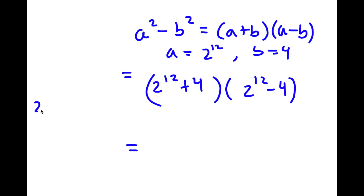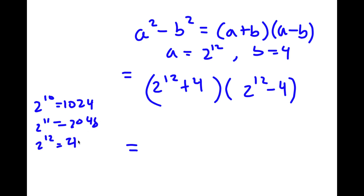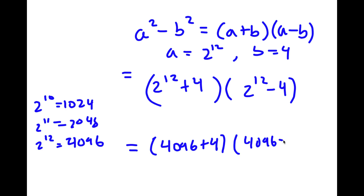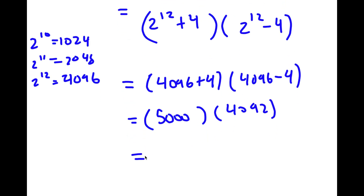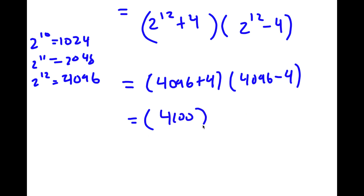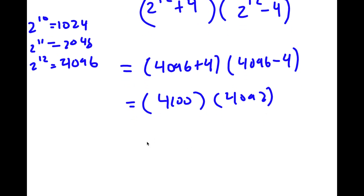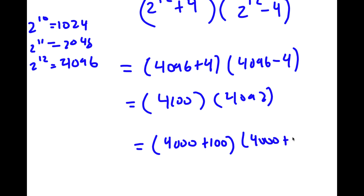Now, 2 to the power of 10 is 1,024. So 2 to the power of 11 is double that, which is 2,048. Meaning 2 to the power of 12 is double of 2,048, which is 4,096. So now I have (4,096 + 4)(4,096 - 4), which is the same thing as 4,100 times 4,092. This is the same thing as (4,000 + 100)(4,000 + 92).